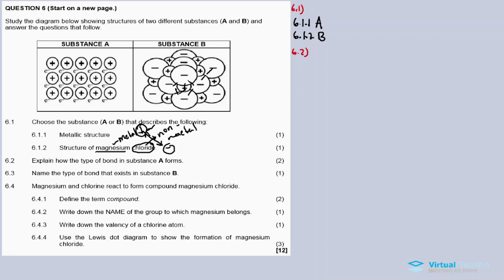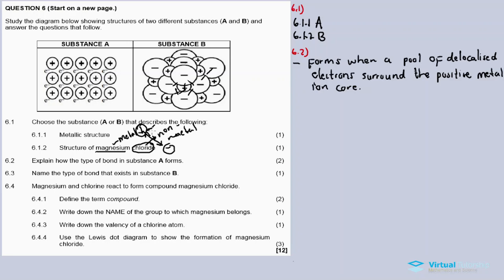Question 6.2 asks us to explain how the type of bond in substance A forms. A metallic bond forms when a pool of delocalized electrons surrounds the positive metal ion cores. The atoms in the metal lose their electrons, becoming positively charged metal ion cores, and those lost electrons are spread around these cores within the metal.